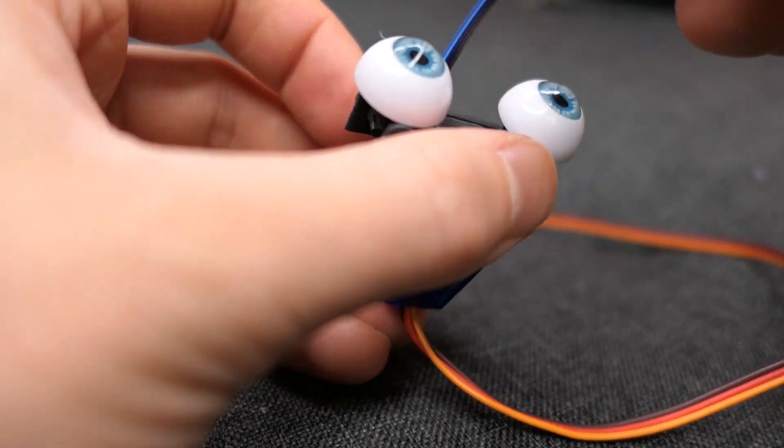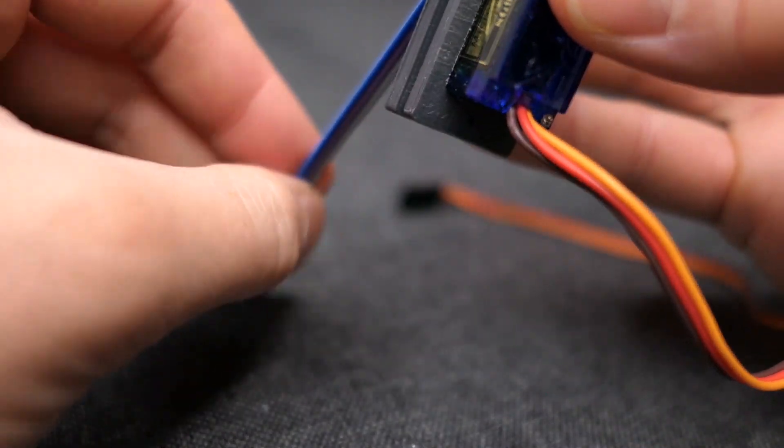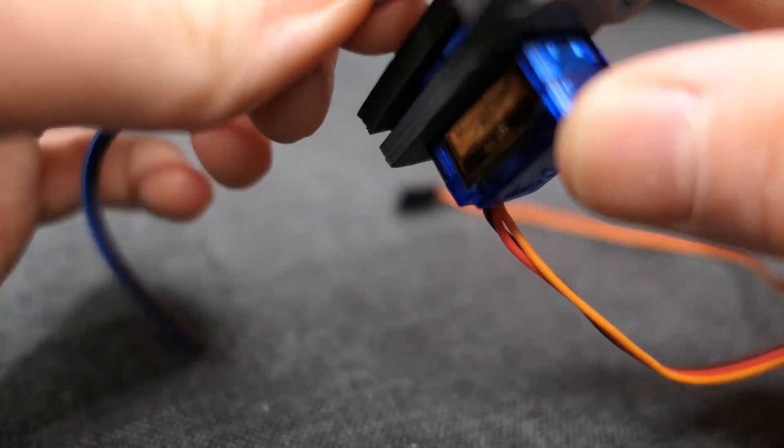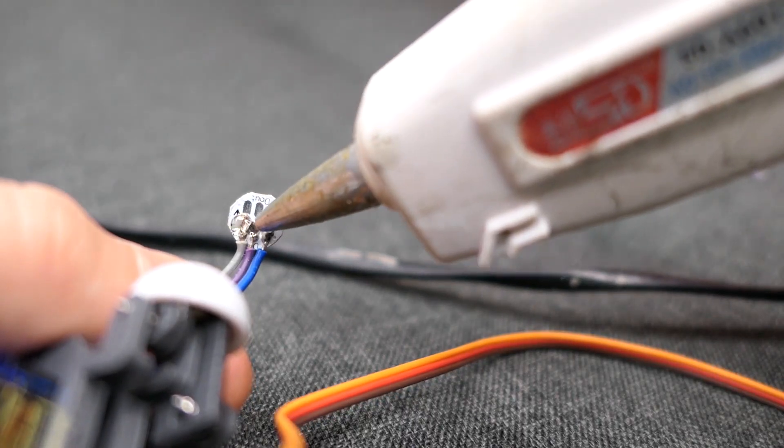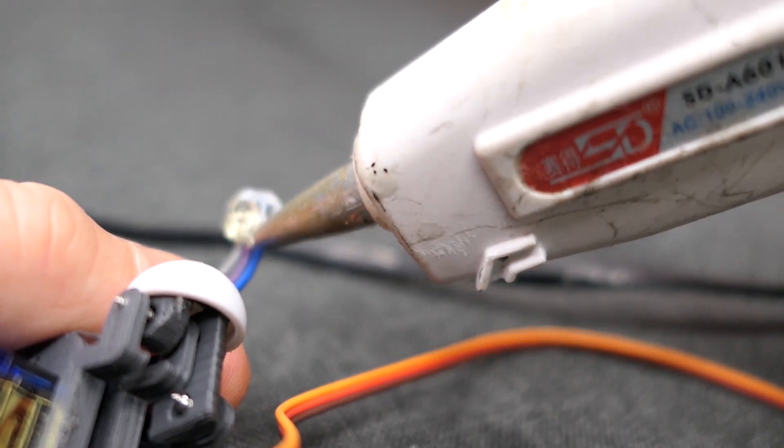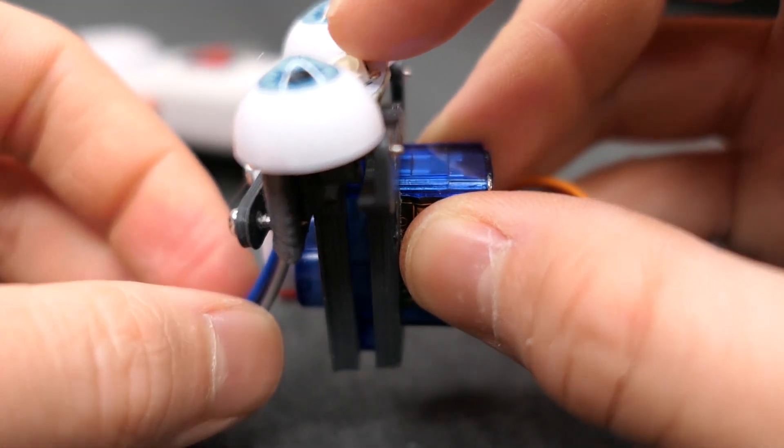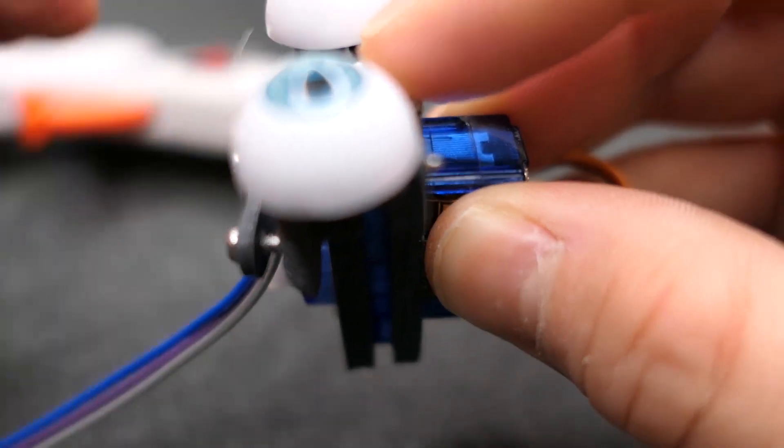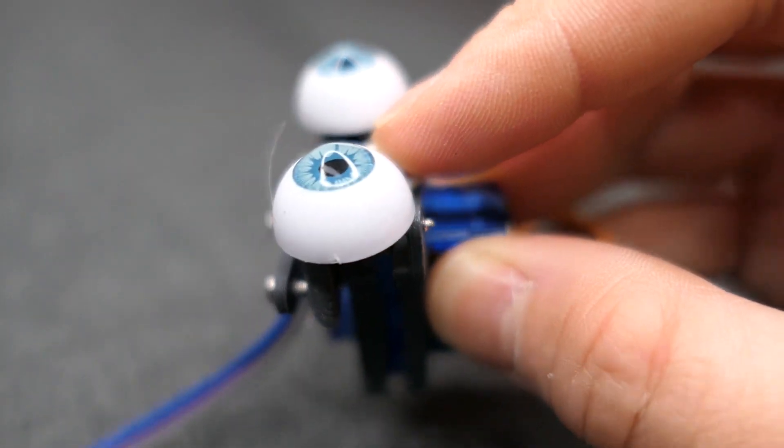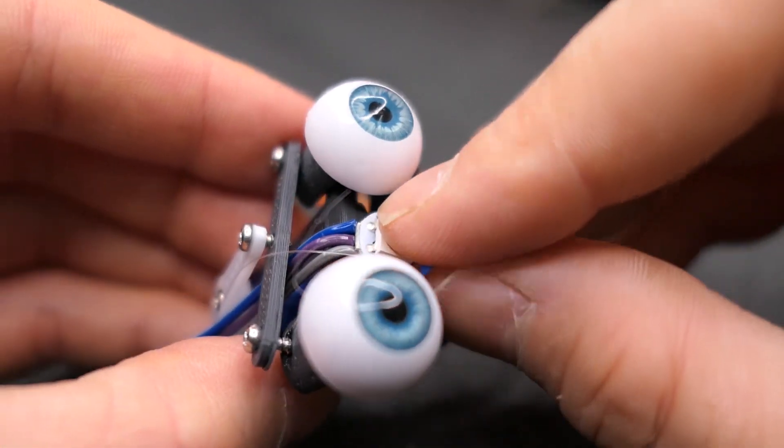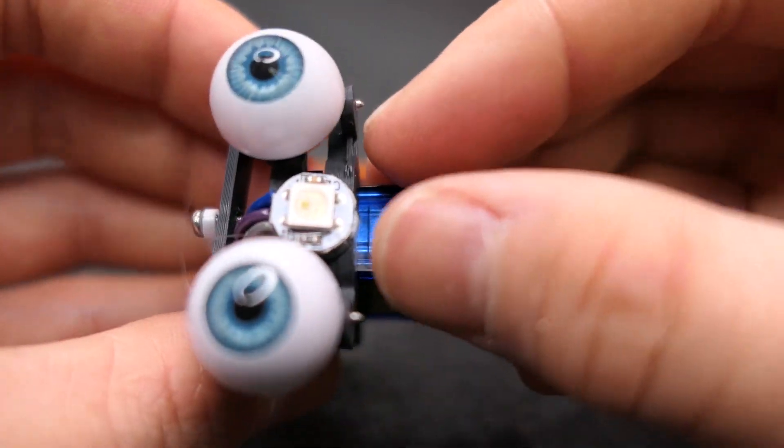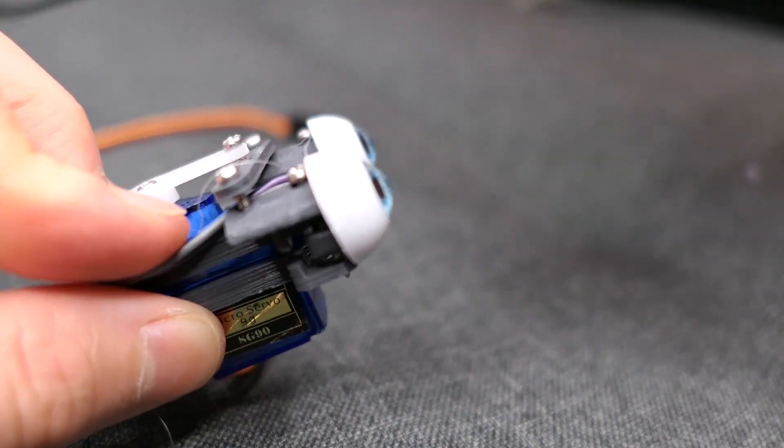Place the LED at the centre of the eye mechanism. Secure in place using hot glue. You may also want to secure the wires in place with hot glue to ensure that they don't come loose.